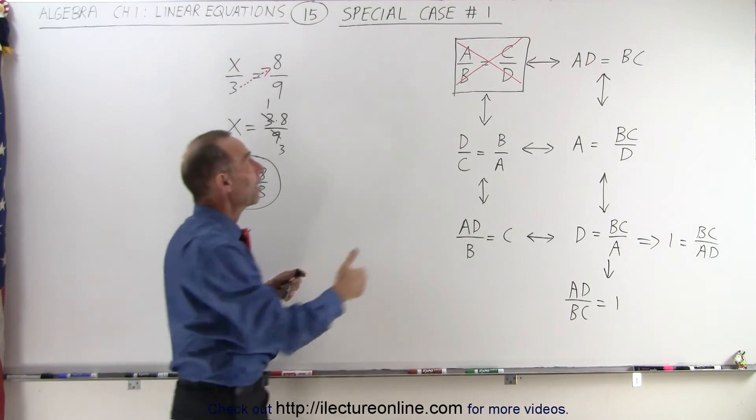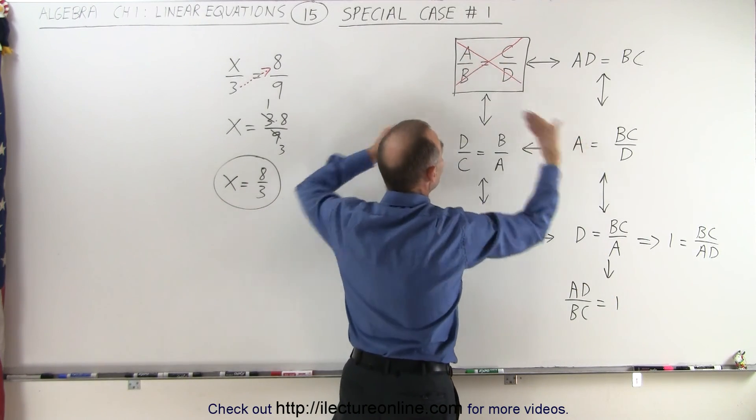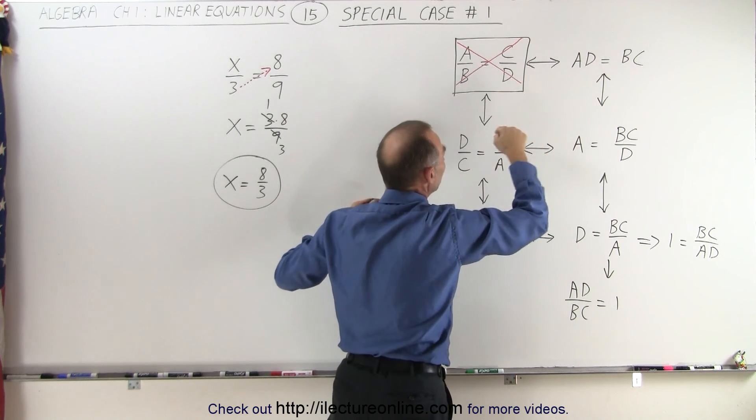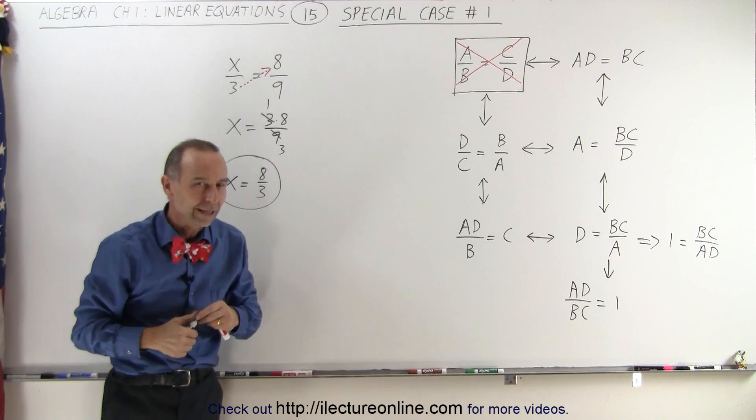And that's what we can do when we have the special case, where we have A over B equals C over D. We can simply move things along the diagonal. Notice that whatever we end up with is simply a multiplication of the terms that are there. And that is how it's done.